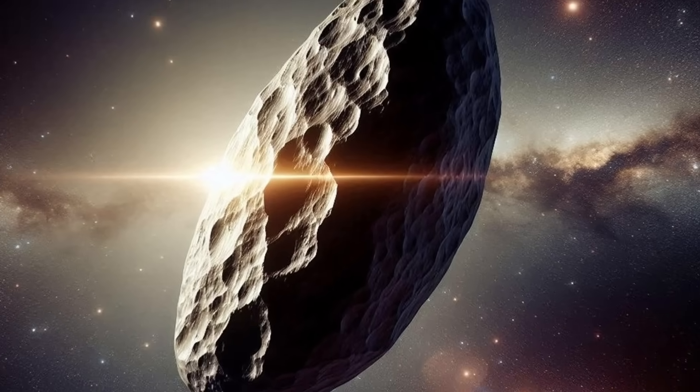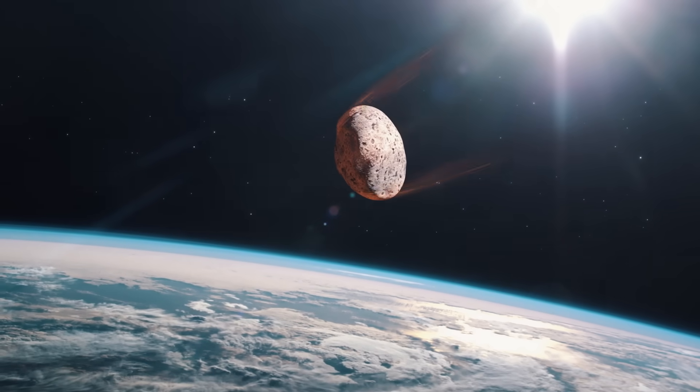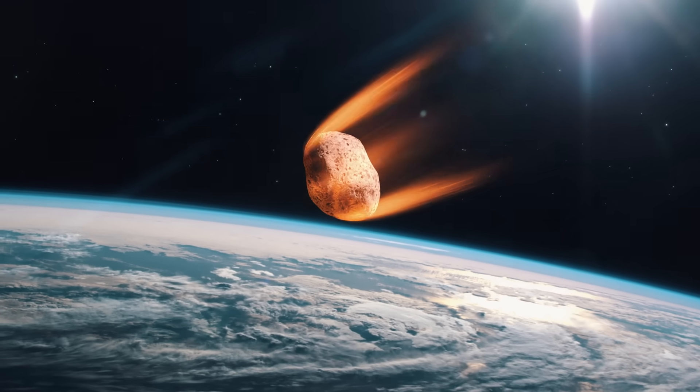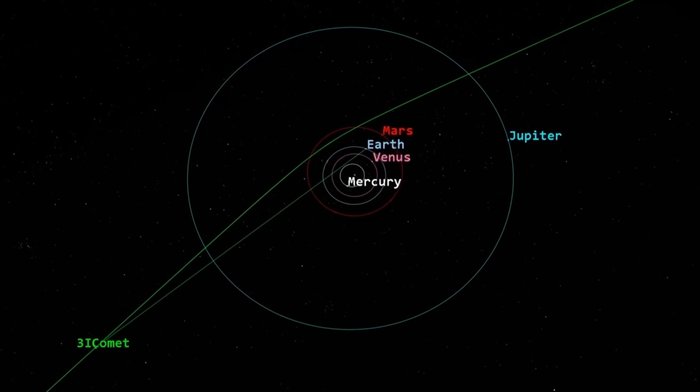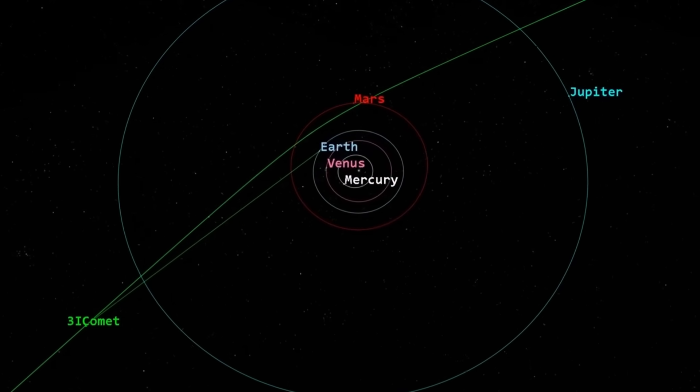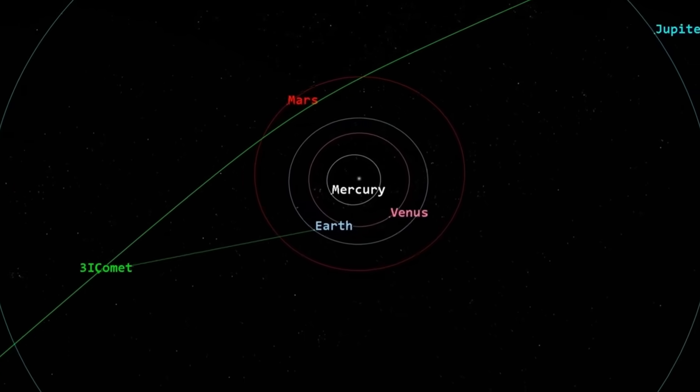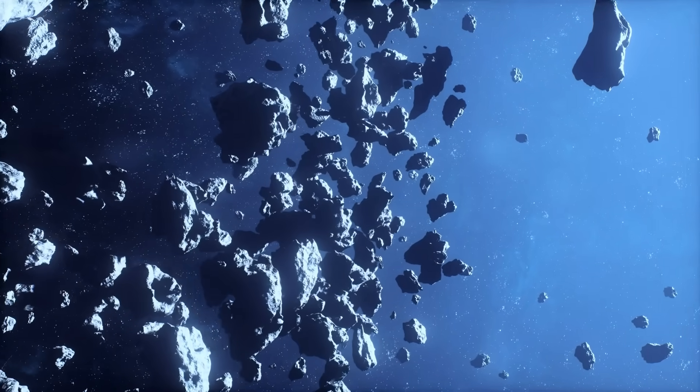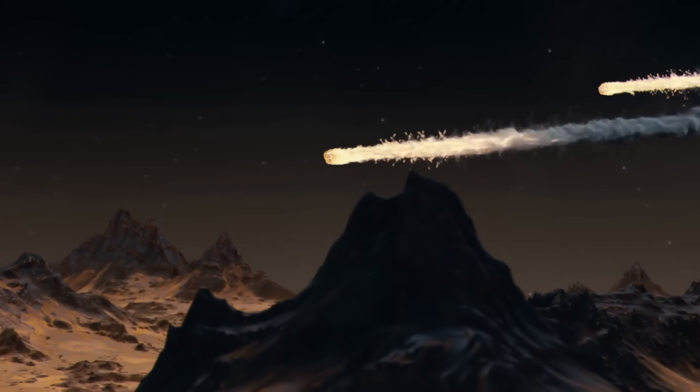NASA continues to reassure the public that Comet 3i Atlas itself poses no immediate danger of colliding with Earth. And from a purely orbital mechanics perspective, this is correct. Its trajectory keeps it at a safe distance, roughly 170 million miles away, well beyond any impact threat. But the greater issue is not about a direct collision. The true concern lies in what appears to accompany 3i Atlas. The nine strange objects, silent, cloaked, and radiating immense power, may represent something far beyond anything in conventional astronomy.